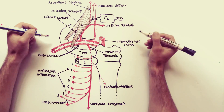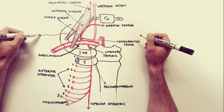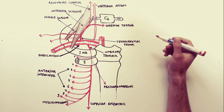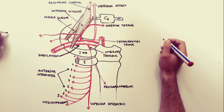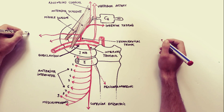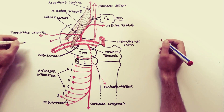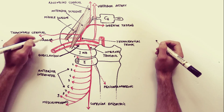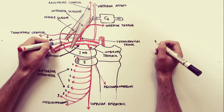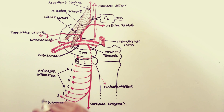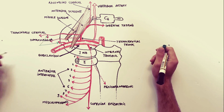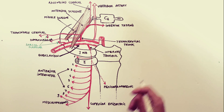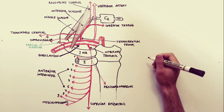From the inferior thyroid artery, the ascending cervical artery originates. From the thyrocervical trunk, two more arteries pass laterally across the anterior scalenus muscle: the transverse cervical artery and the suprascapular artery. From the transverse cervical artery may arise the dorsal scapular artery, but usually the dorsal scapular artery arises directly from the subclavian artery, just lateral to the anterior scalenus muscle.